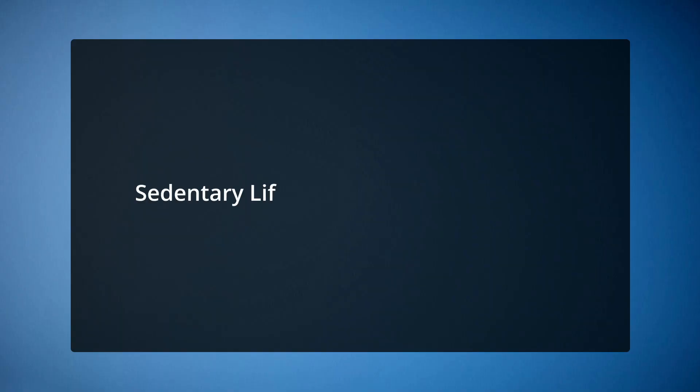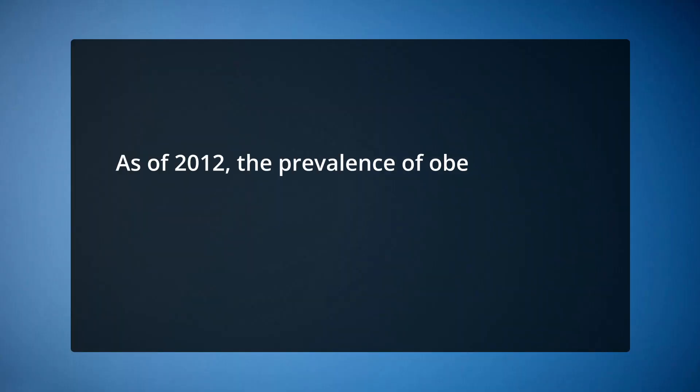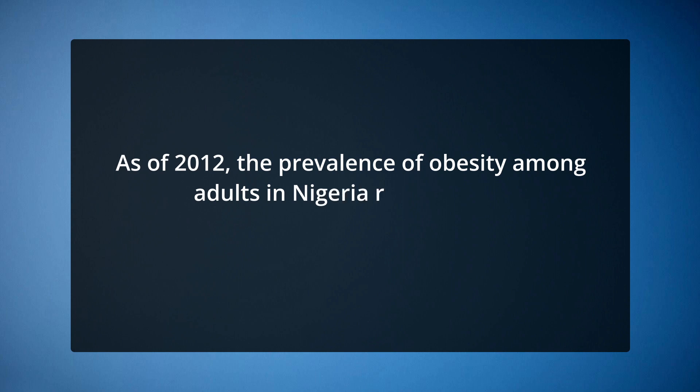Coming to sedentary lifestyle and obesity in adults: in Europe, between 50 and 75 percent of persons between the ages of 35 and 64 are either overweight or obese. Obesity is also a significant health issue in developing nations due to high rates of morbidity and mortality. As of 2012, the prevalence of obesity among adults in Nigeria ranged from 20.3% to 35.1%. Nigeria, the most populous country in Africa, has a high incidence of obesity due to changing lifestyles brought on by advanced technology and automation.